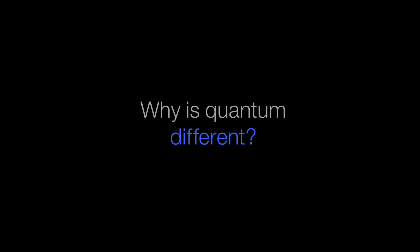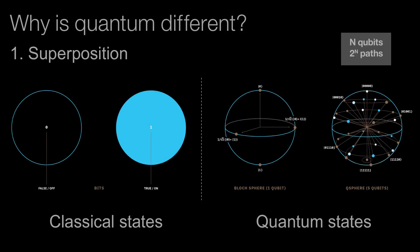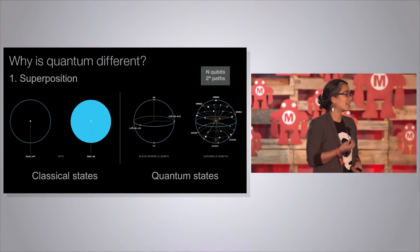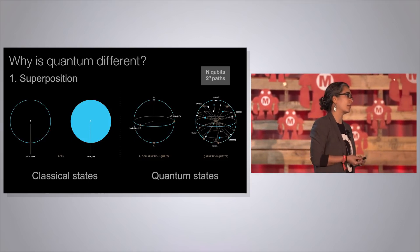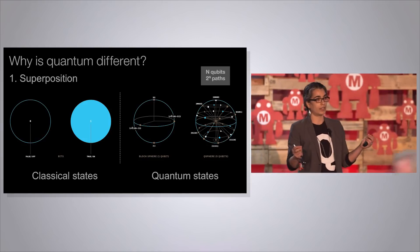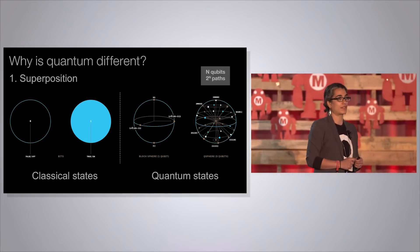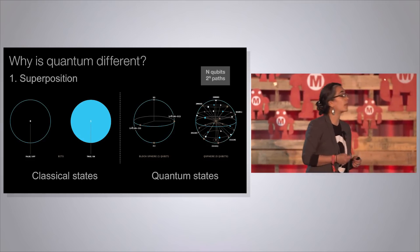So why do we think quantum computing is actually going to allow us to solve some of these problems we can't solve classically? It boils down to two fundamentally quantum effects. The first is superposition. Classical information is basically a string of zeros and ones — everything that classical computing has enabled boils down to a sequence of zeros and ones. Quantum information has the property that states can exist in a superposition of zero and one — not just zero, not just one, but a superposition. You can also have complex superpositions, so you start to be able to explore a much richer set of states.